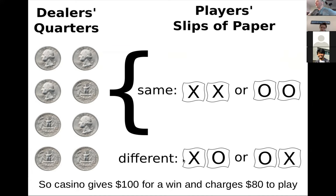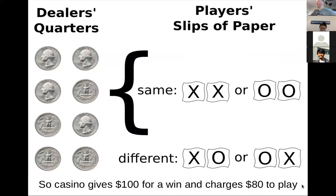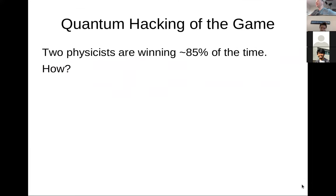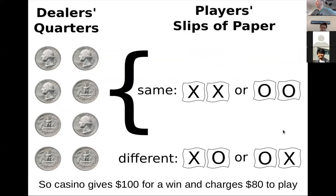No matter how you strategize, no matter how complicated your strategy, the maximum probability of winning classically is 75%. Yet two physicists using quantum entanglement can win 85% of the time, and you can mathematically prove that no classical strategy — even a probabilistic one — can beat 75%.